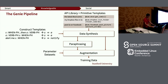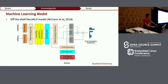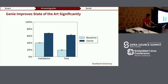We can also take a small amount of paraphrases and expand them manually into new construct templates, giving more value to the crowdsource workers. For the machine learning model, we use an off-the-shelf DecNLP model — a contextual question-answering model from Salesforce, a bi-LSTM and self-attention model. The key insight is that Genie improves the state-of-the-art significantly — even without any realistic training data from real users, we still get 62% accuracy on real data.